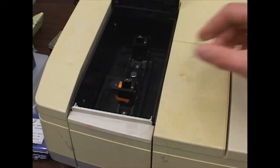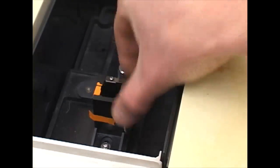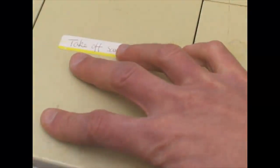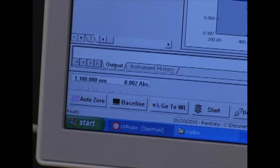For glass slides we have a little holder on the side. We are going to load our blank sample. We have to do baseline again because we changed the type of the sample.